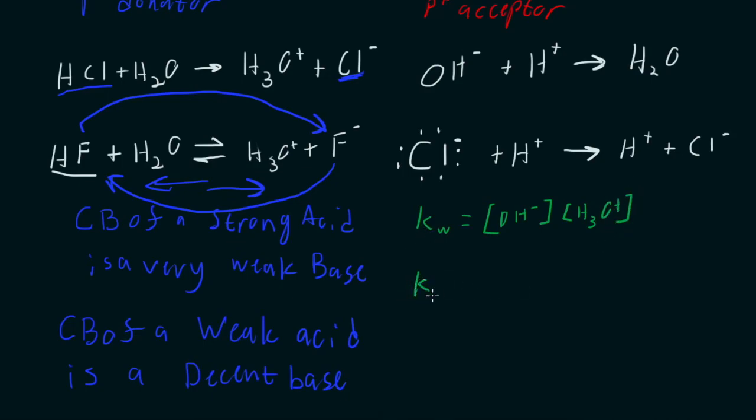Well, when we have K, we call that an equilibrium constant, and when we deal with acids and bases, we're going to call it Ka or Kb, and that's going to be the dissociation constant for an acid, dissociation constant for a base.